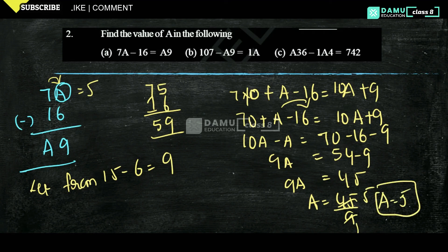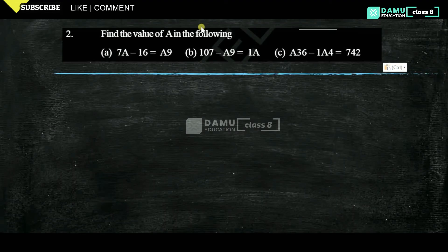So using expanded form, you can write and calculate easily. Our next one is B: 107 minus A9 equals 1A.